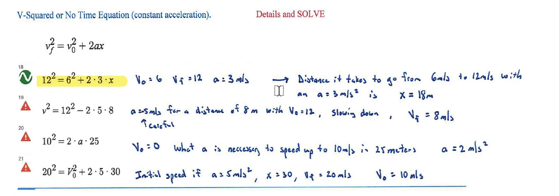Now I try to look at all the permutations. The second equation, v² equals 12² minus 2 times 5 times 8, is saying I'm going 12 meters per second and I'm going to slow down at 5 meters per second squared acceleration for 8 meters. The question is how fast will I be going after that? You're going to be going 8 meters per second after slowing down.